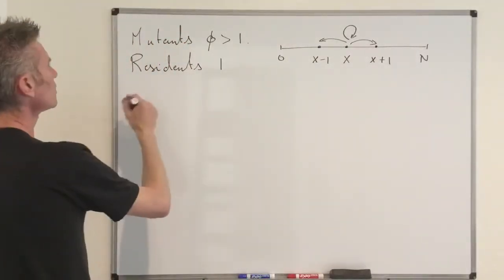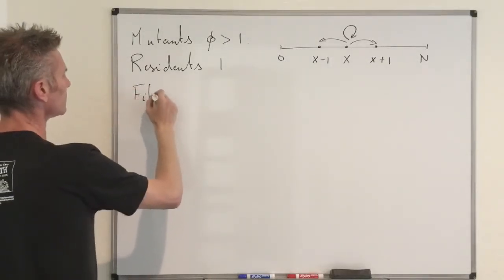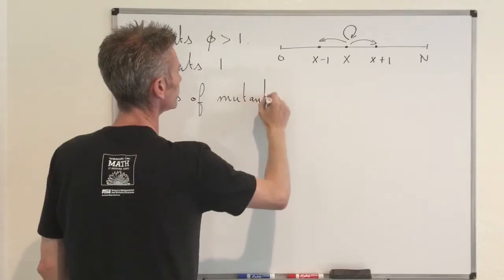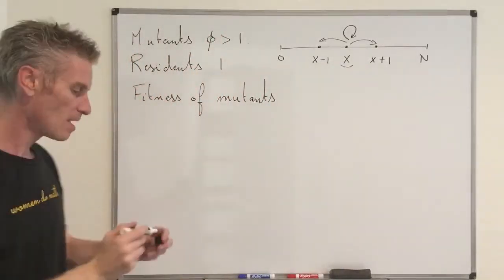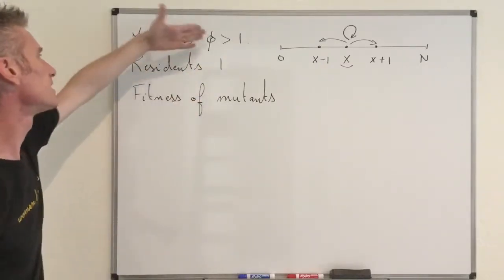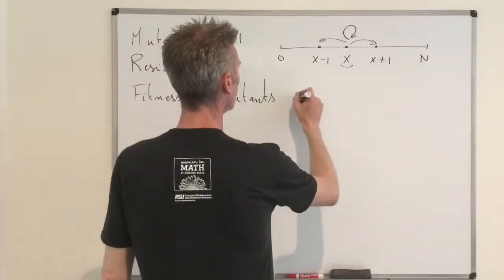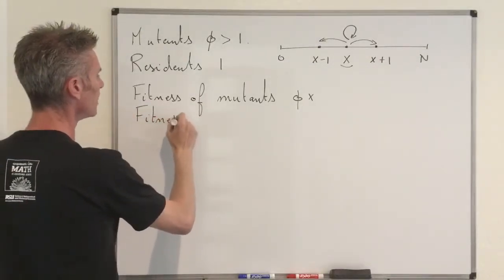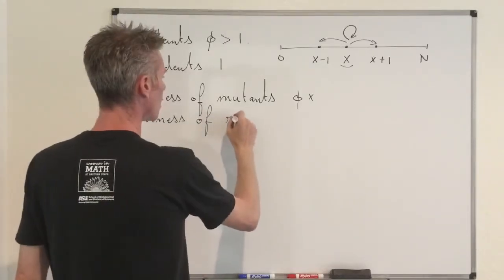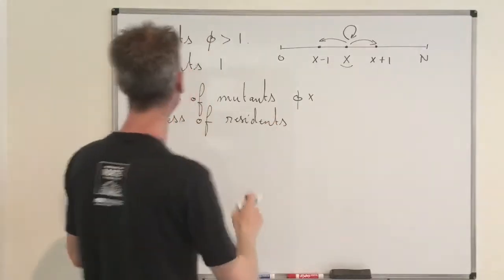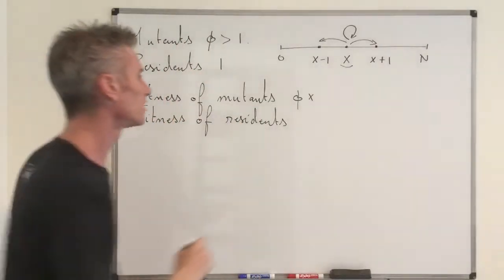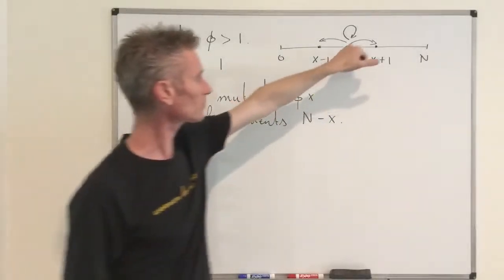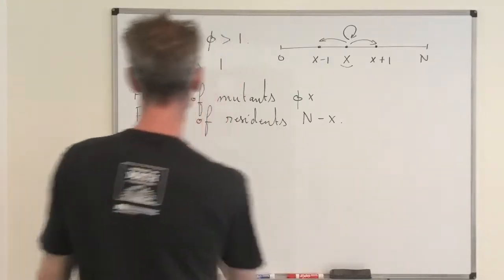The first thing to observe is the overall fitness of mutants. We assume X is the number of mutants. Because each mutant has fitness phi, all of them together have cumulative fitness phi times X. For residents, the cumulative fitness is one times the number of residents, which is N minus X. From those quantities, we can derive the probabilities of going from X to X+1 or X to X-1.